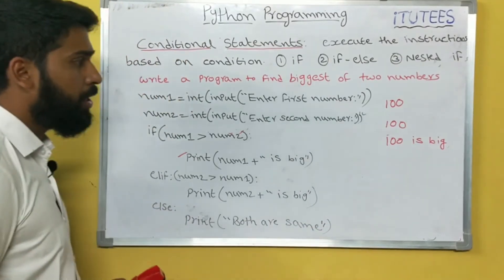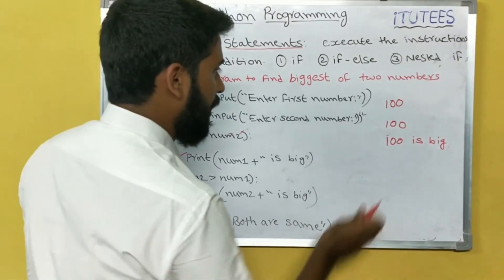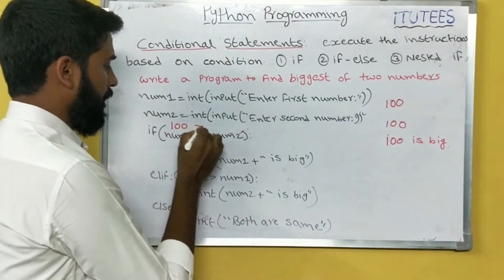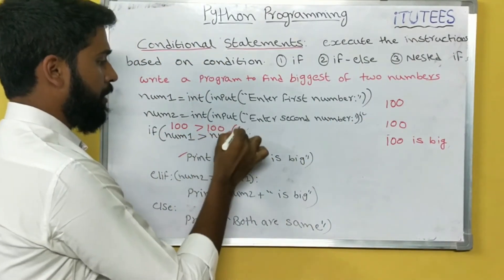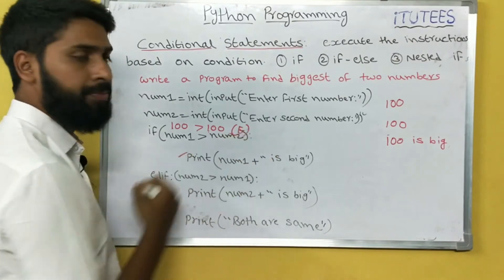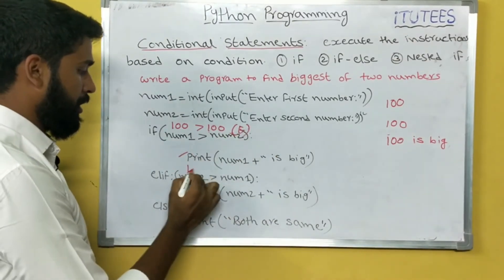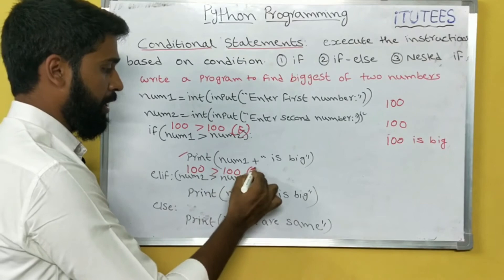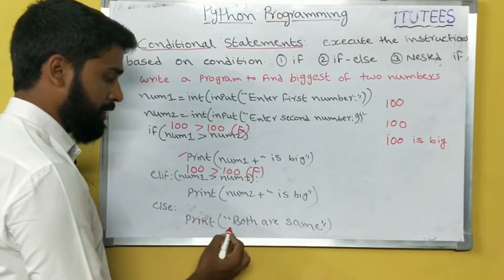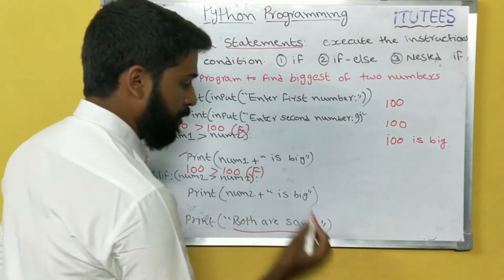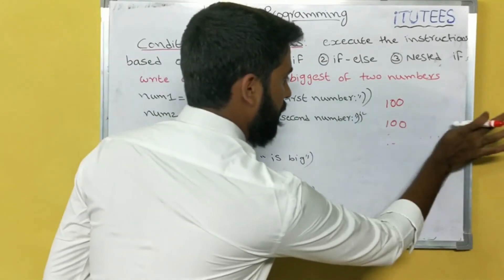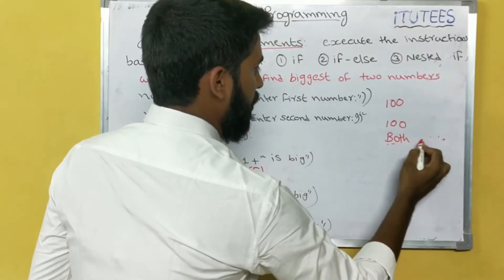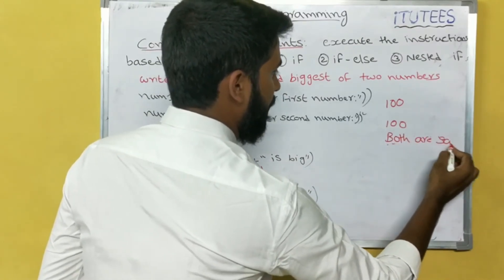Now with 100 and 100: number1 equals 100, number2 equals 100. Is number1 greater than number2? False. Go to next instruction: is number2 greater than number1? False. So go to else — print 'both are same'.